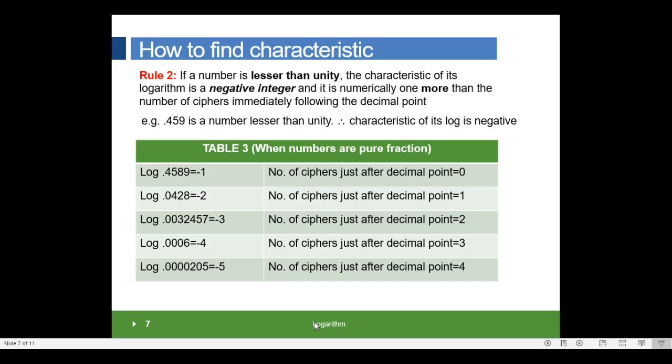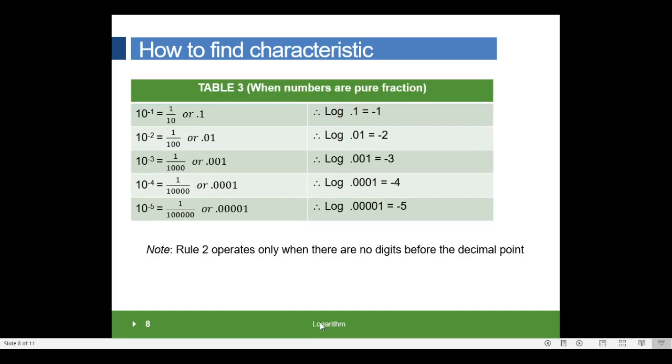Refer to Table 3 when numbers are pure fractions. For example, log 0.4589 is equal to 1 bar. Here, the number of zeros just after the decimal point is 0. Second, log 0.428 is equal to 2 bar. Number of zeros just after decimal point is equal to 1, and so on.